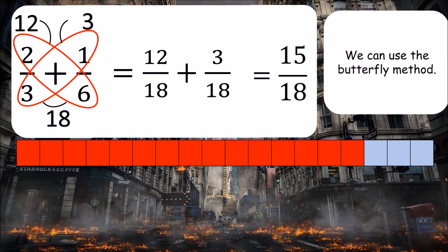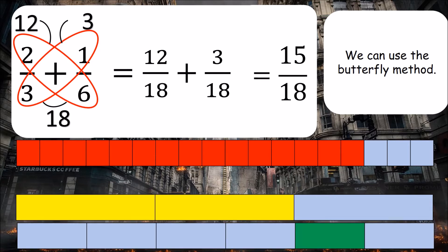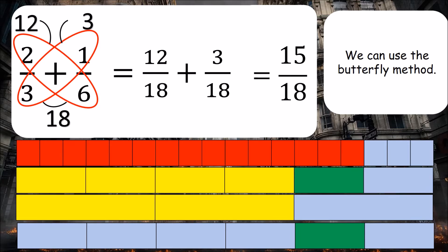Now we can show this pictorially. This is the answer fifteen eighteenths. The red represents the fifteen. And if we look at our two thirds and we also look at our one sixth, we can see that when we add them together, they are equivalent in size to fifteen eighteenths. Now if you look at the second bar down, we can see that split into six pieces and five of those six pieces are coloured in. So while the answer is fifteen eighteenths, the equivalent fraction to fifteen eighteenths is five sixths.